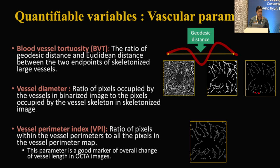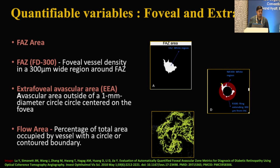Quantifiable variables for the fovea include: FAZ — foveal avascular zone; FD300 — vessel density around 300 microns of the foveal avascular zone; extra-foveal avascular area — the avascular area outside a 1 mm diameter circle centered on the fovea; and flow area — manually or automatically drawn to calculate vessel density. Confounding factors affecting quantitative OCTA analysis include lack of normative data, inter-individual variations, age variations, and axial length — which affects lateral magnification. Shorter axial length means the OCTA scan area is smaller; in myopia it is larger — smaller area makes FAZ occupy a larger proportion, resulting in erroneously lower vessel density.